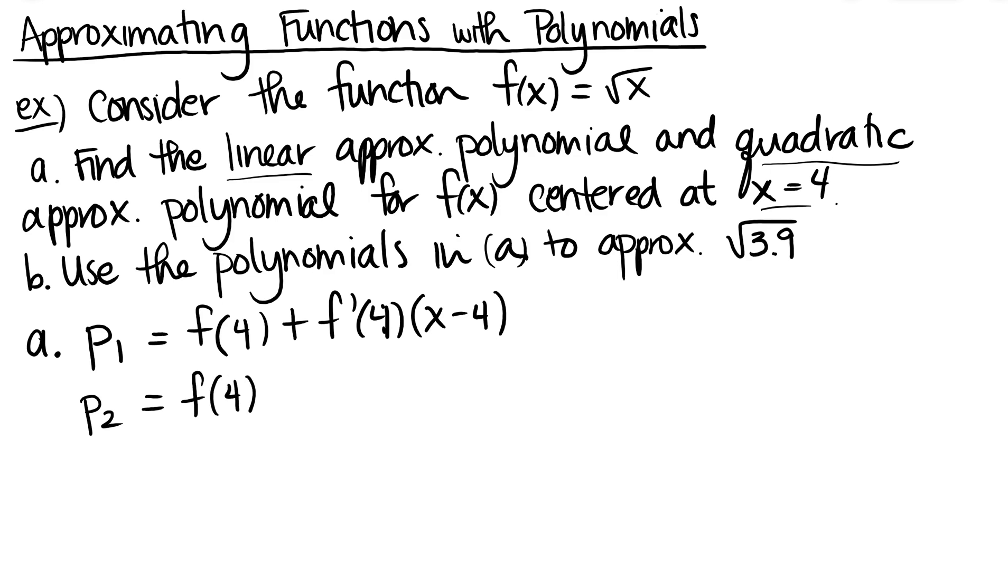So the second order polynomial, Taylor polynomial - you don't have to reinvent the wheel here. It's always going to be the same as P sub 1, and then we're just going to add on another term. And that's going to be the second derivative divided by 2 factorial times x minus 4 squared.